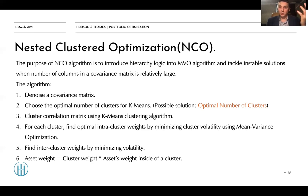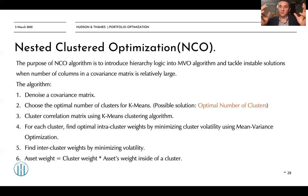The Nested Cluster Optimization algorithm massively reduces the dimension of problems solved in the optimization. On one hand, it still preserves and uses the power of mean-variance optimization. On the other hand, it avoids the Markowitz's curse because it separates one big problem into a set of various small problems, applies mean-variance optimization to each of them, and after that finds the weights for individual assets.